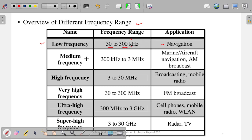Next is medium frequency, whose range is from 300 kilohertz to 3 megahertz. This is used basically for marine — meaning ships and navy personnel — and for aircraft navigation. Aeroplanes use this frequency, as well as AM broadcast.